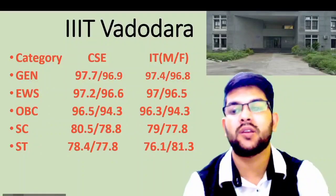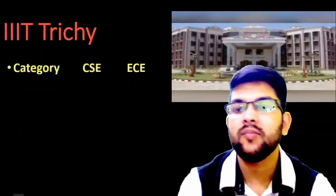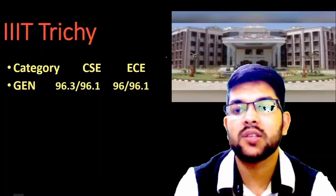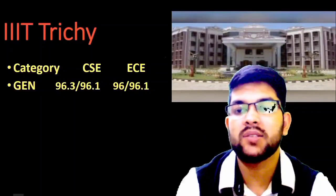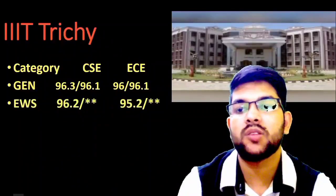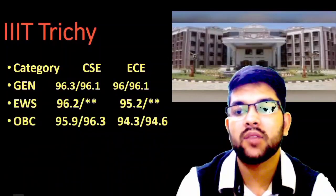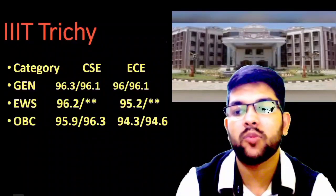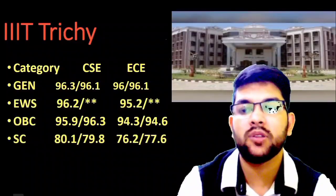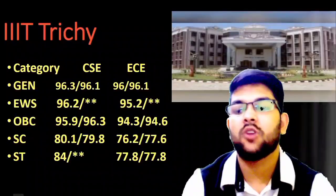Next is IIIT 3G. Here is the information. For general candidates: 96.3 and 96 percentile — male CSC; for female CSC, check after the slash. For EWS: 96.2 and 95.2. For OBC: 95.9 and 94.3. For SC: 80.1 and 76.2, and for ST: 84 and 77.8 percentile.